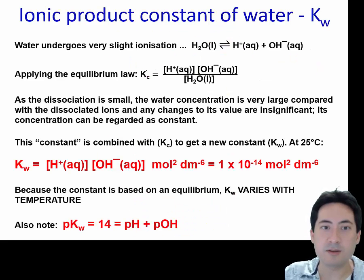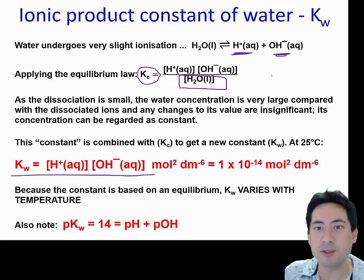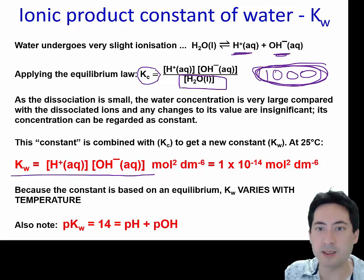Ion product constant of water now. This is like the equilibrium constant. Because the concentration of water is so large compared to the amount of hydrogen ions and hydroxide ions that dissociate, we actually get rid of this H2O from the bottom. As a rule of thumb in chemistry, anything that's about a thousand out we can eliminate.